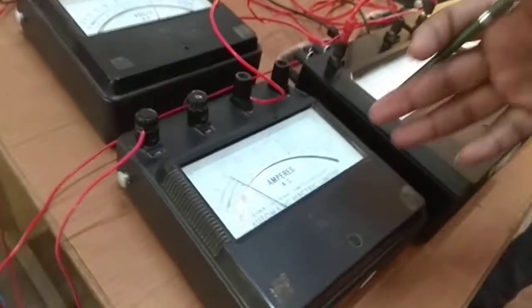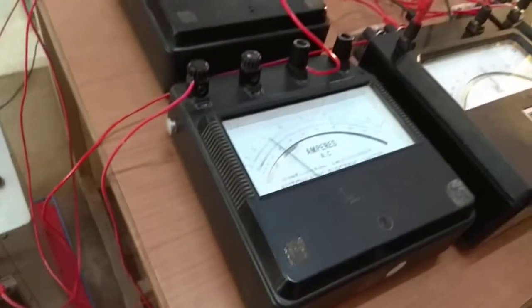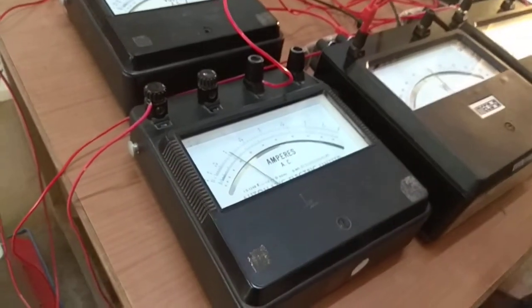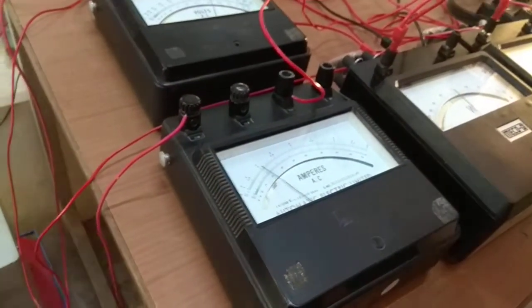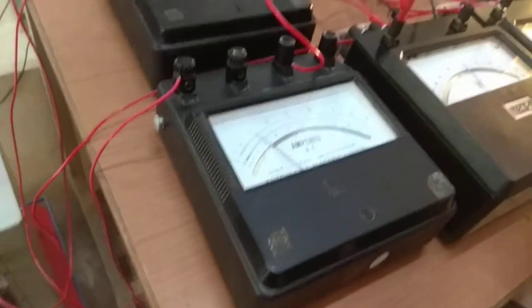Now once again, set the armature current at 4 ampere by varying the field resistance of synchronous machine. And at this value, let us note down all the meter readings.